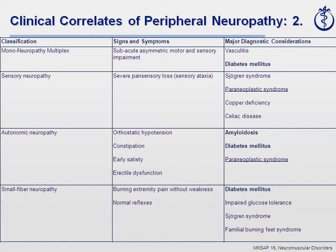The second part of the clinical correlates table emphasizes mononeuritis multiplex — more than one single nerve in more than one extremity — with the two examples being diabetes and neuropathy associated with vasculitis. Under severe pansensory loss, where the patient has trouble with feeling, position sense, and vibration sense — all of them gone — it causes balance problems called sensory ataxia. This is differentiated from cerebellar ataxia, which when in the midline can affect the trunk, and in the limbs affects finger-to-nose or heel-to-shin testing.